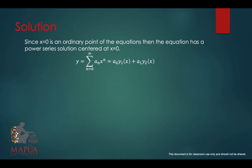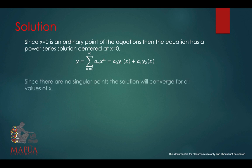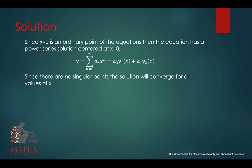The solution of the differential equation has the form y equal to the summation of a_n x raised to n, from n equals 0 to positive infinity. This can be expanded and simplified into a_0 y_1 plus a_1 y_2, since a second order differential equation has two arbitrary constants for the general solution. Since there are no singular points, the solution will converge for all values of x.